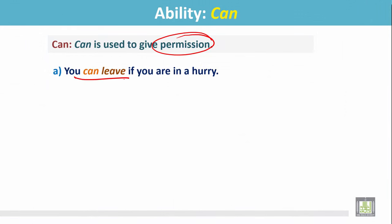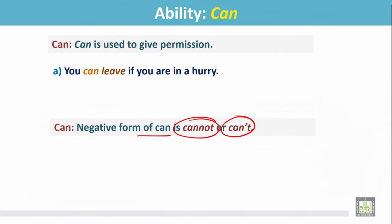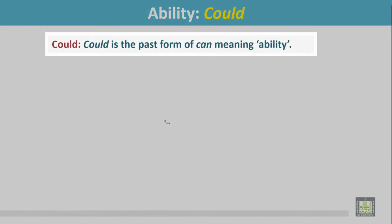You can leave means you are permitted to leave. Someone is giving you permission to leave. The negative form of can is cannot or can't. Examples: She cannot speak Arabic. Ahmed can't swim. Ability: Could. Could is the past form of can, meaning ability.